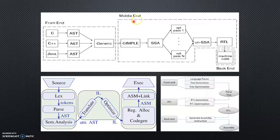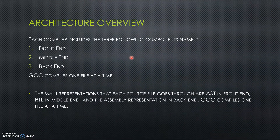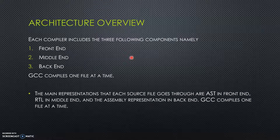The GCC also uses a 3-pass compiler architecture. Each compiler includes 3 components: the front-end, middle-end, and back-end. Every component has a specific job — it takes one kind of file and transforms it into another. For example, the source file is converted to AST by the front-end, which is then further converted into RTL by the middle-end, and the back-end finally converts this to assembly representation.